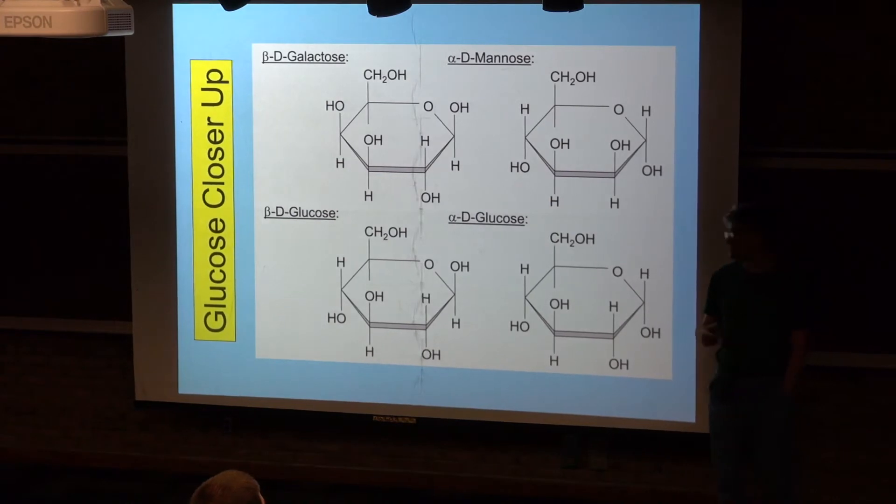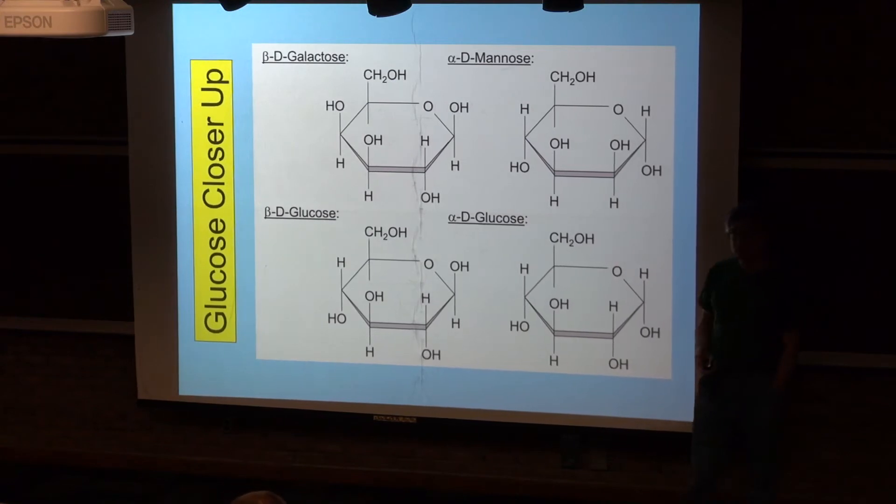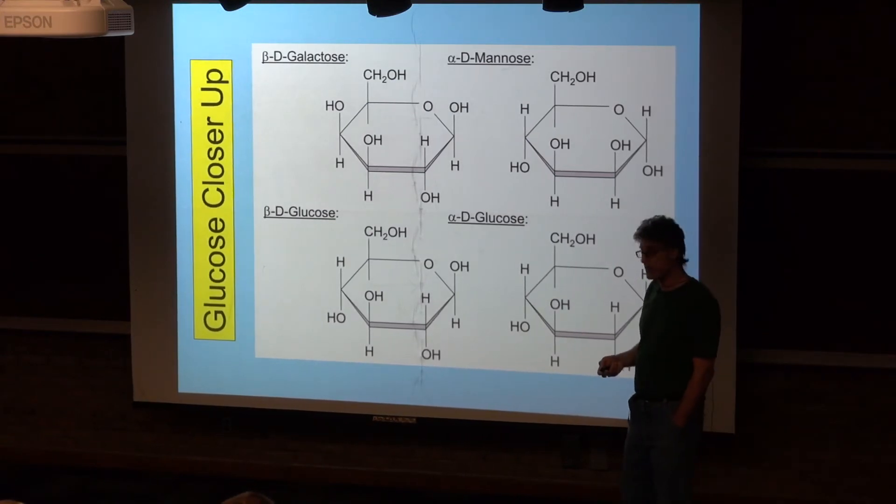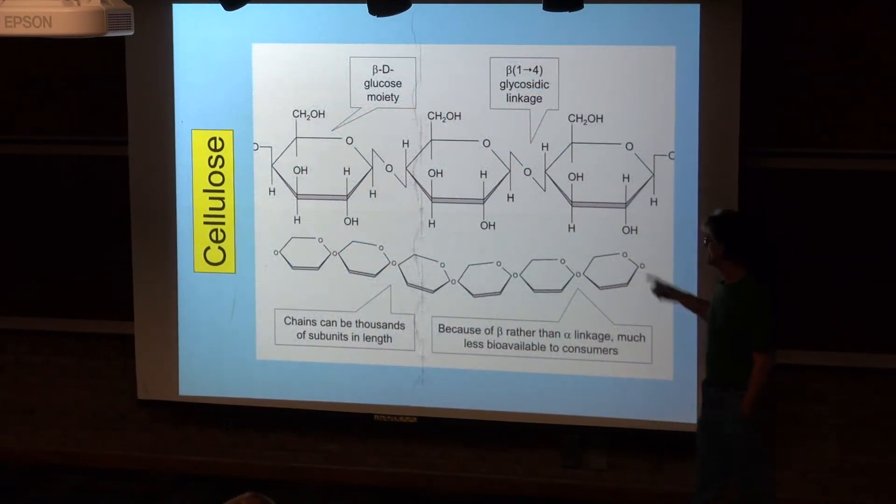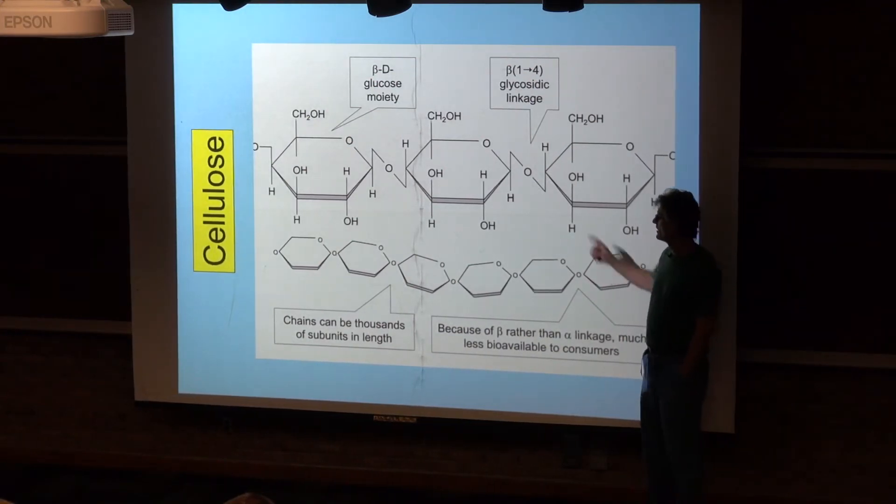This is called beta-D-glucose and this is called alpha-D-glucose. When you see a starch, the starches are made of alpha-D-glucose, but the beta-D-glucose are also found in a molecule, an important molecule which is also a polysaccharide but is not a starch, called cellulose.